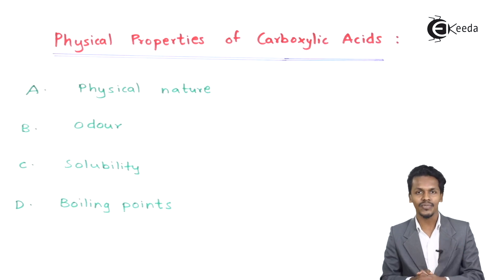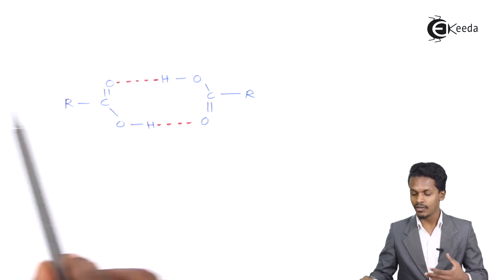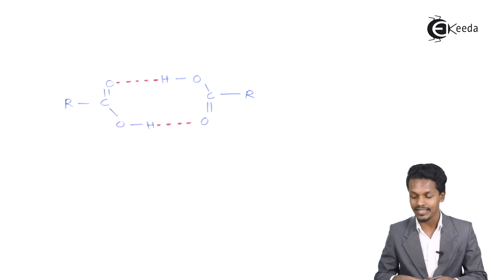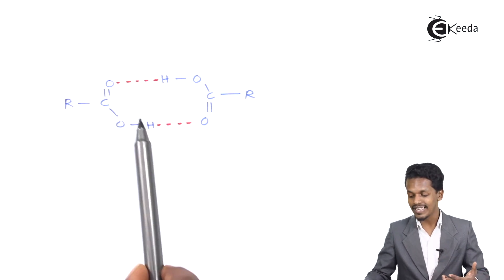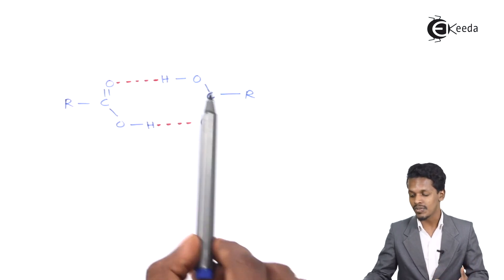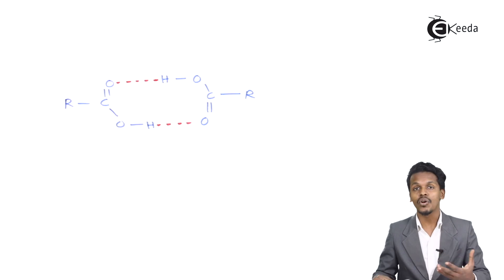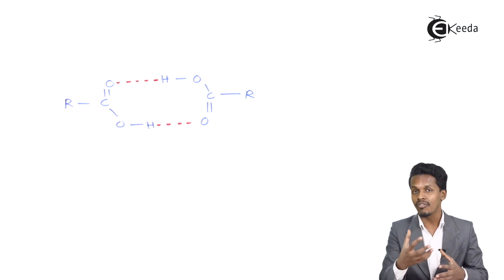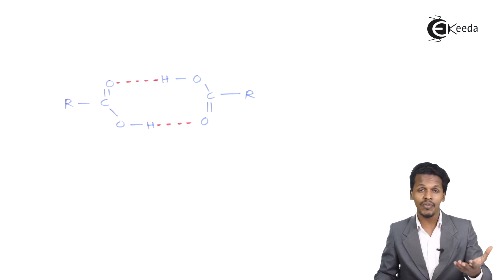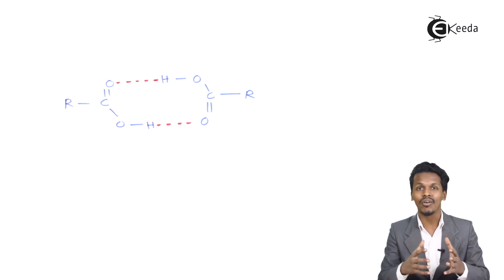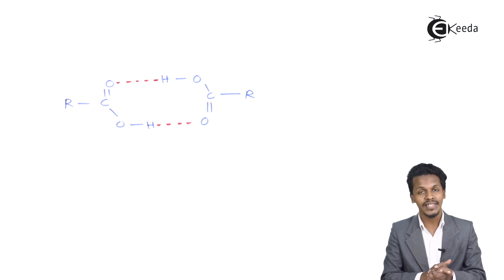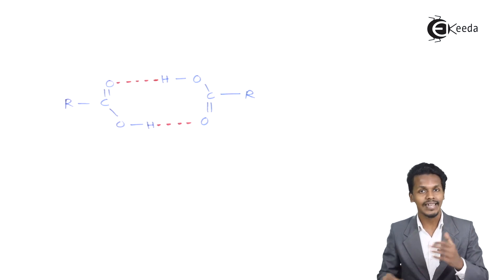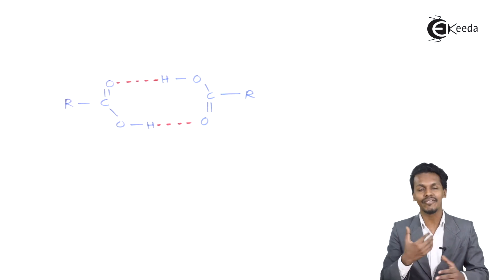Let me give an example. If we consider two carboxylic acid molecules, the oxygen atom of one carboxylic acid forms a hydrogen bond with the hydrogen atom of the other carboxylic acid, and vice versa. This creates hydrogen bonding between them. Because of this hydrogen bonding, even in liquid form they have stronger intermolecular forces than alcohols. Even in the vapor phase, carboxylic acids form dimers — they remain bonded with each other very strongly. That is why carboxylic acids have a much higher boiling point compared to alcohols.